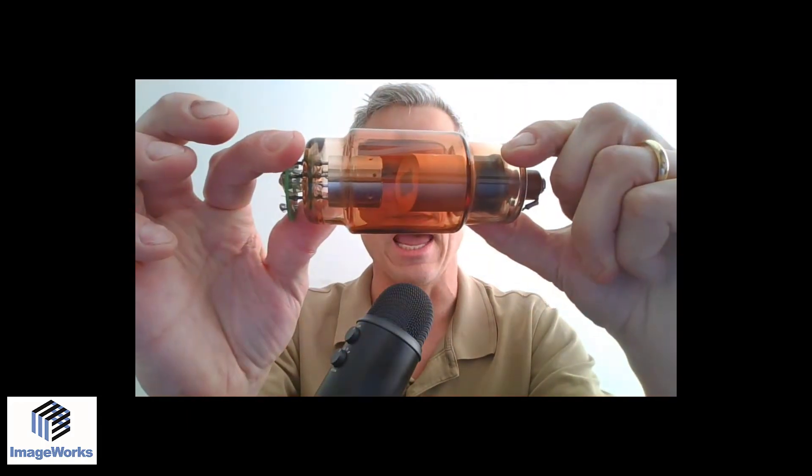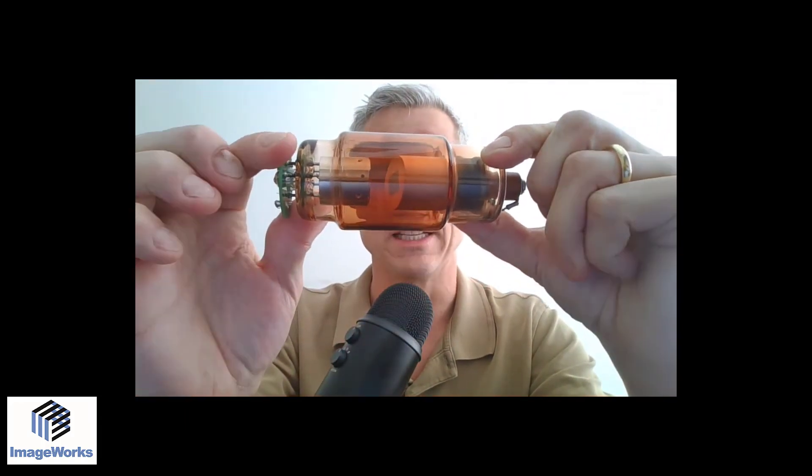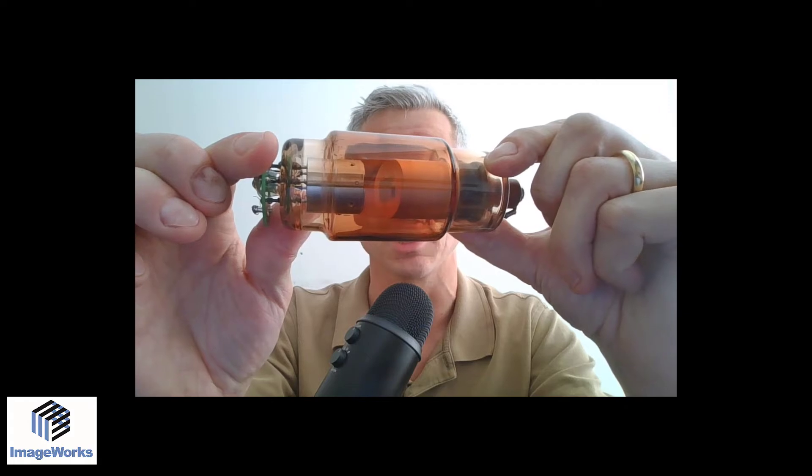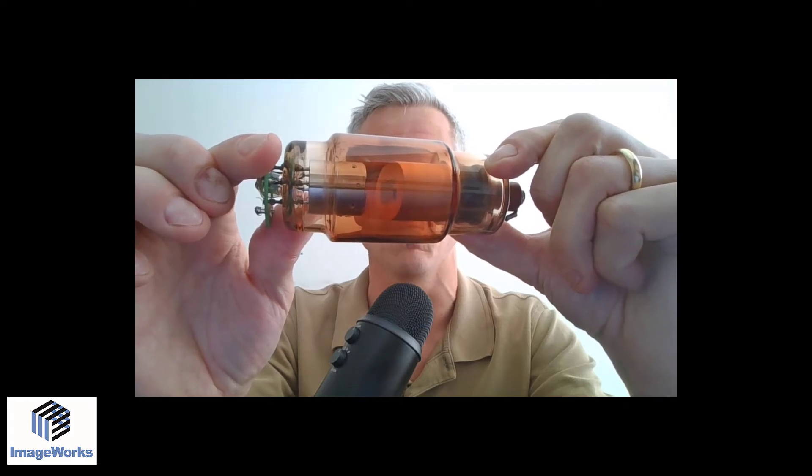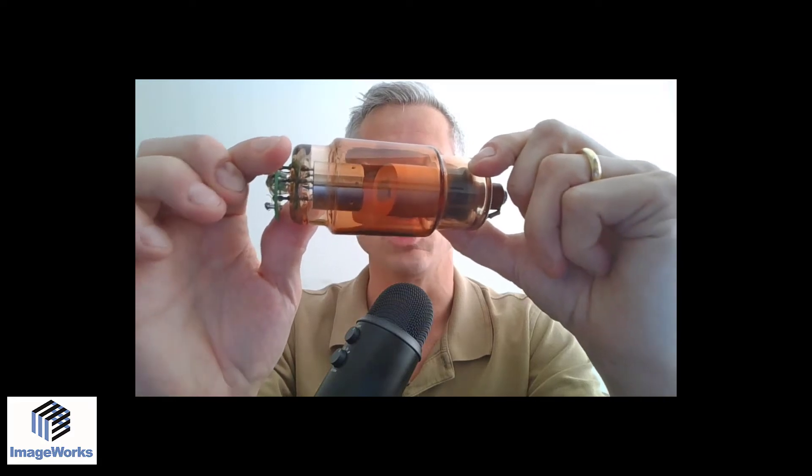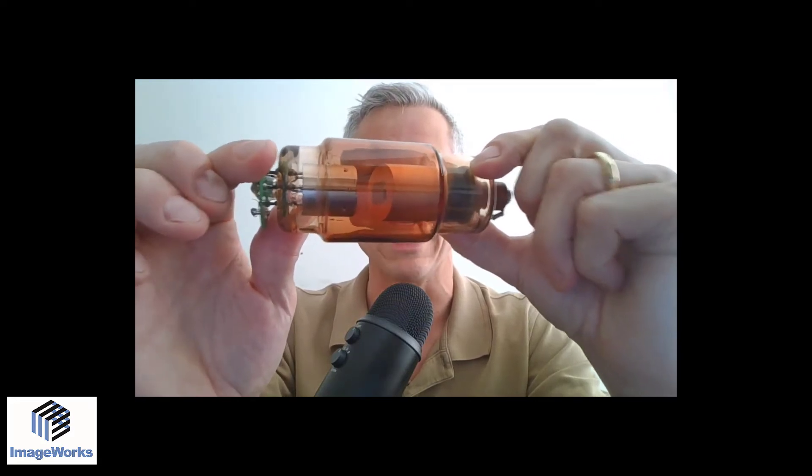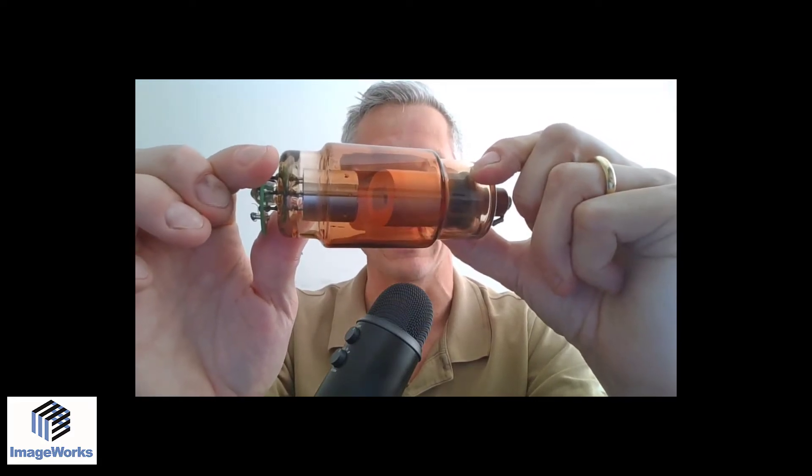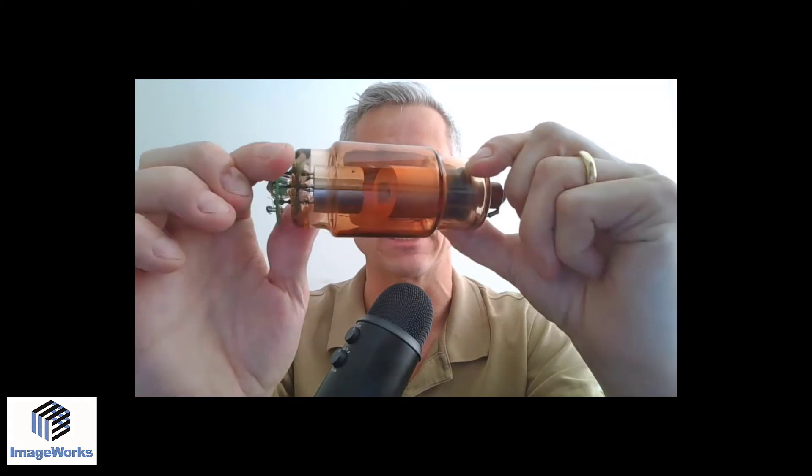So I thought this would be an interesting show and tell. This is actually an x-ray tube from a cone beam system, a system we removed from an office when we put in one of our Xera cone beam systems. I thought this would be a good way to explain what a focal spot is for any dental x-ray and how that can affect image quality.